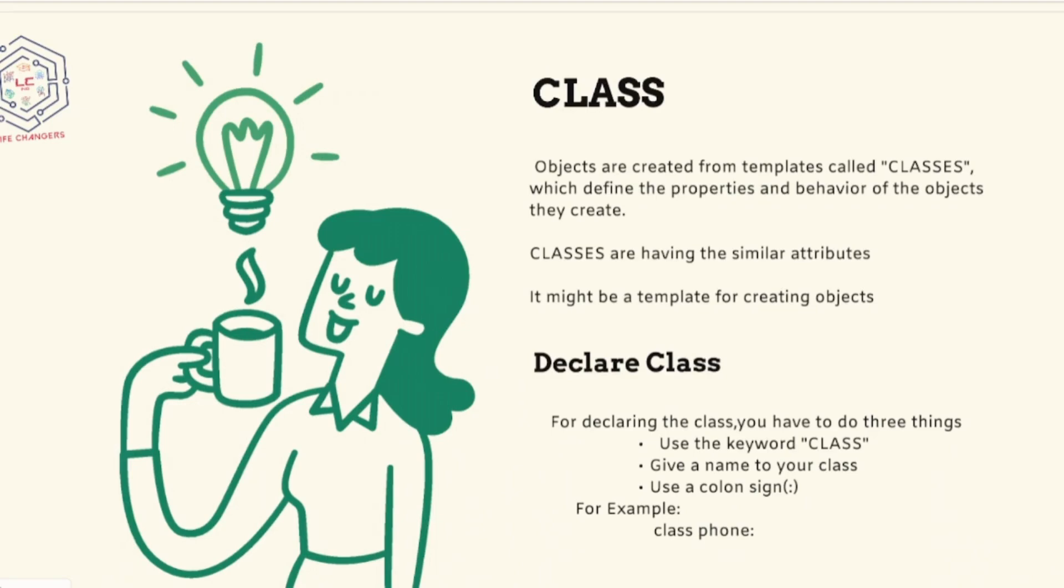Have you ever heard the term middle class? Similar to the economic class or business class while buying tickets? Why do you call them classes? Because they have a few similar attributes. Even in a school, everyone in the same class has similar attributes. They study the same subjects, they have the same teacher and they are in a similar age group. That's why they are called classes.